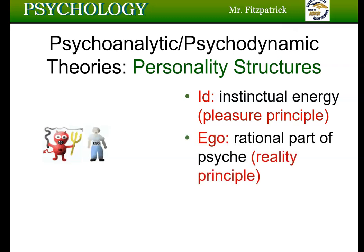The ego is the rational part of the psyche that develops as a child grows. It's responsible for planning, problem solving, reasoning, and controlling the potentially destructive energy of the id. The ego's task is to channel and release that id's energy in ways that are compatible with the real world, so the ego operates on the reality principle.